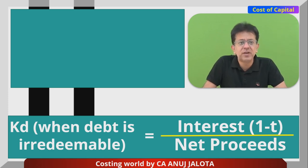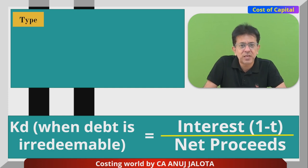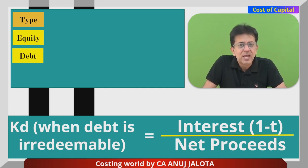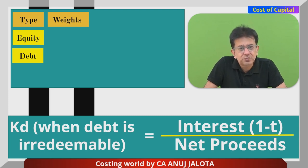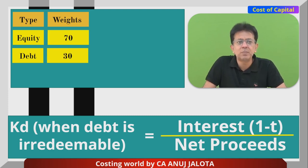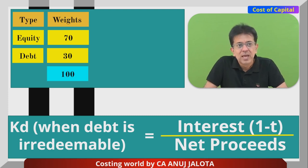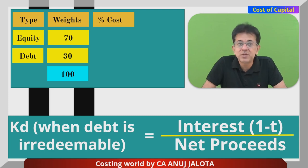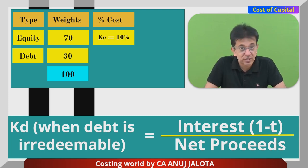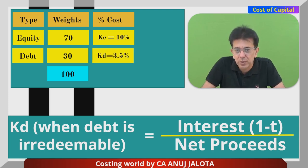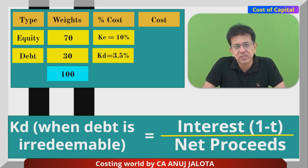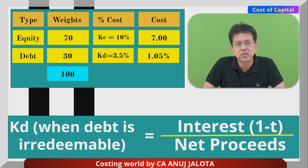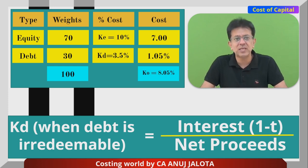Now let's calculate Ko, the weighted average cost of capital. You always make a table like this: Type | Weight | % Cost. For equity the weight is 70, for debt it is 30, totaling 100. If you use decimals, weights are 0.7 and 0.3. Ke is 10% (directly from the question) and Kd is 3.5%. Multiplying weights by percentage costs: 70 × 10% = 7, and 30 × 3.5% = 1.05.